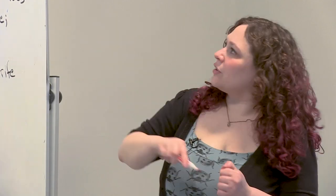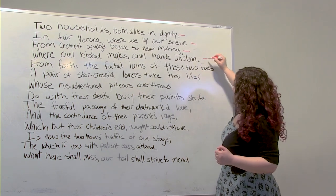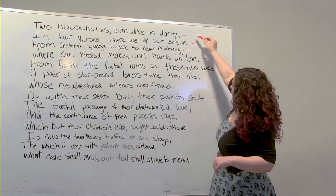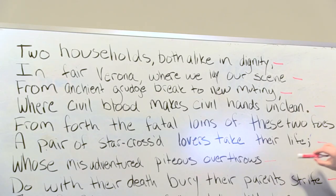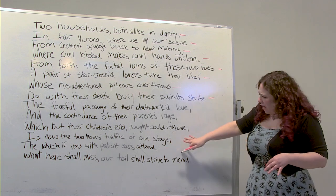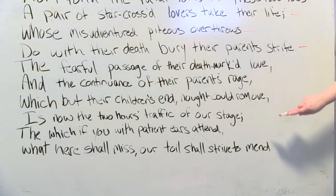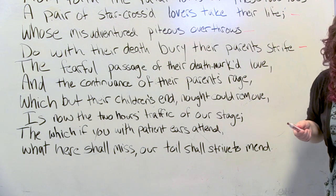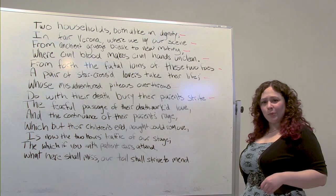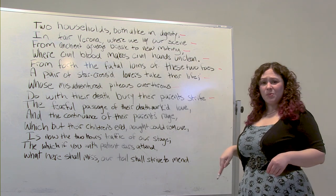Now we've got some rhyme going on here. We've got dignity and mutiny, scene and unclean, foes and throws, life and strife — so we have an A, B, A, B, C, D, C, D rhyming scheme. And at the end there's a little rhyming couplet: mend and attend. If you look at how many lines we have in total, there are 14 lines. So — 14 lines, ABAB CDCD, iambic pentameter, with a rhyming couplet at the end — we are dealing with a sonnet structure. Shakespeare gave us this prologue in the structure of a sonnet. That's pretty cool.